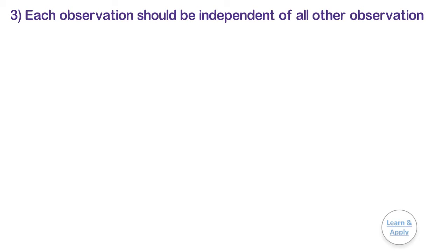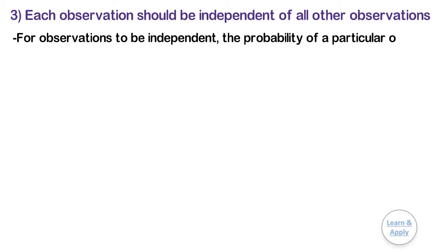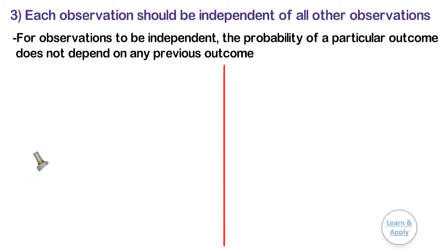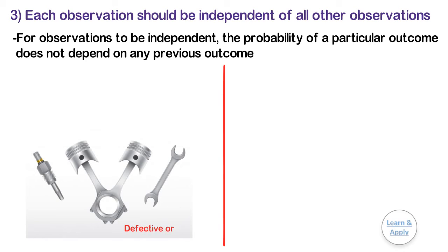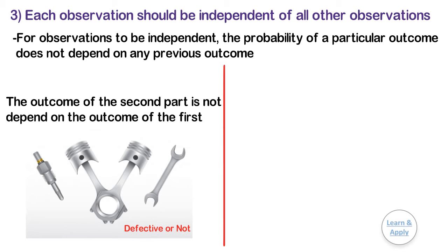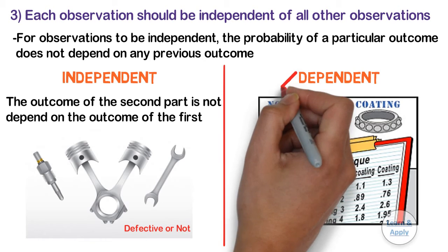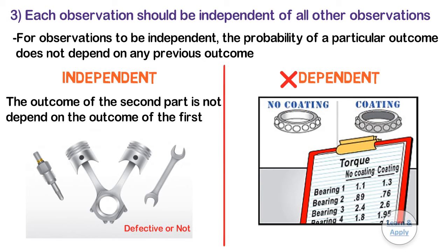Each observation should be independent of all other observations. For observations to be independent, the probability of a particular outcome does not depend on any previous outcome. For example, if you select two parts and record whether they are defective or not, the outcome of the second part should not depend on the outcome of the first. If your observations are dependent, then your results may not be valid.